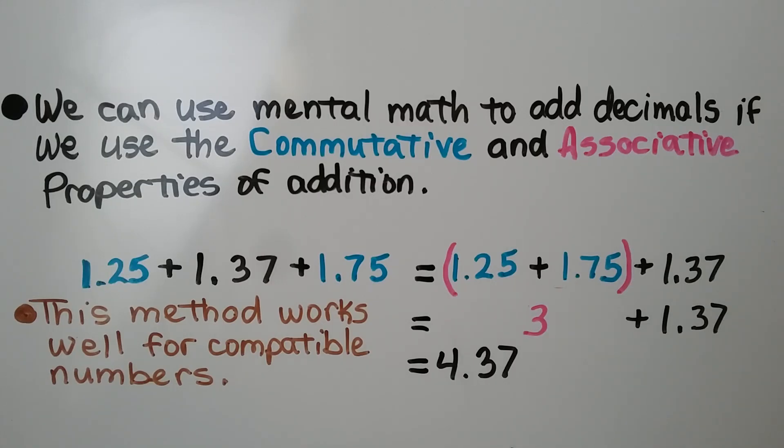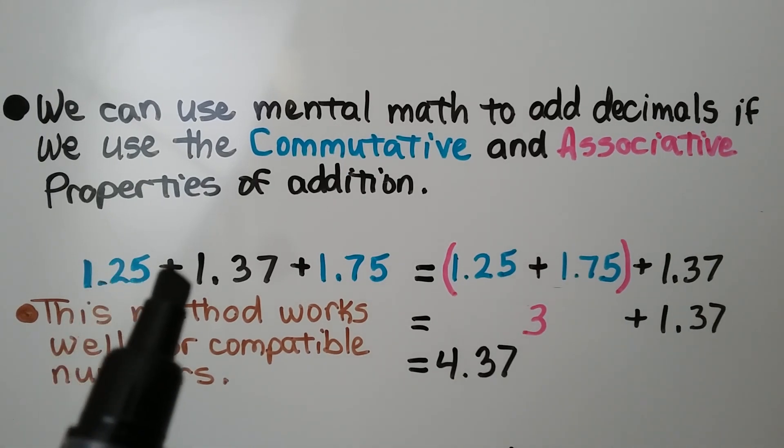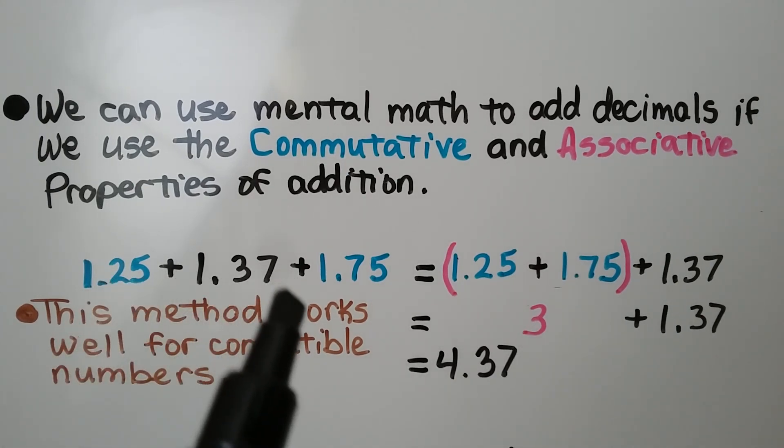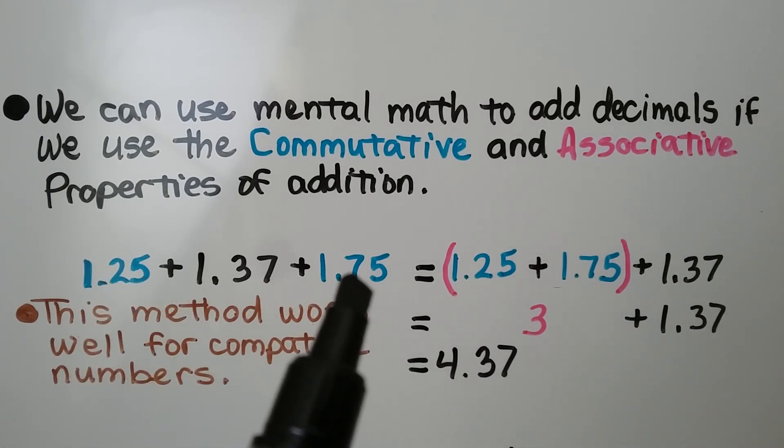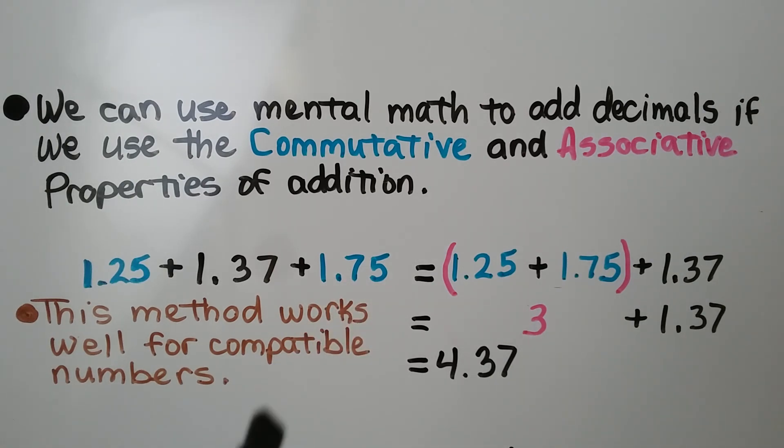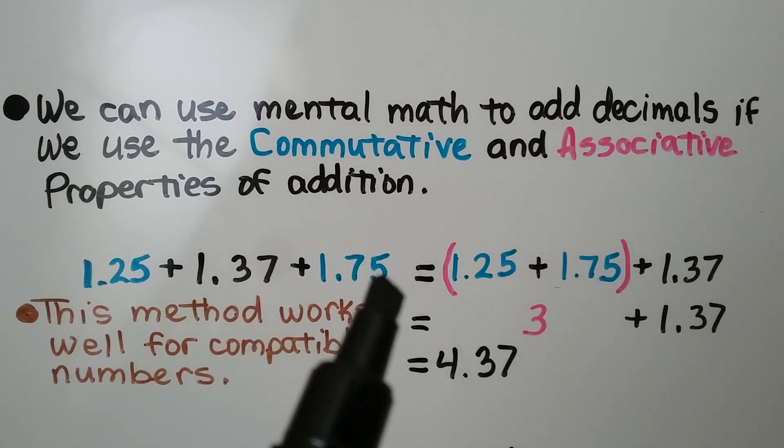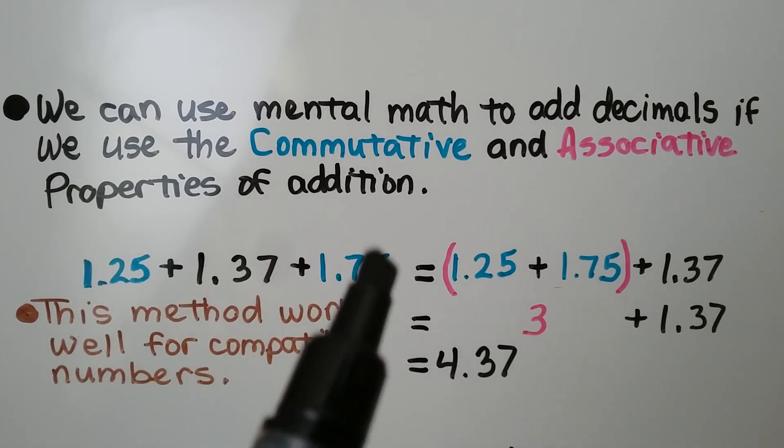We can use mental math to add decimals if we use the commutative and associative properties of addition. Here we need to add 1.25 plus 1.37 plus 1.75. This method works well for compatible numbers. The 25 hundredths and 75 hundredths will make one whole.